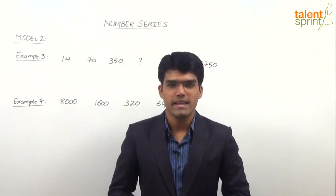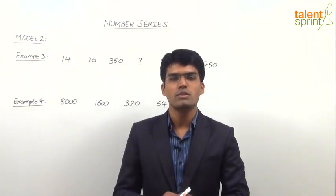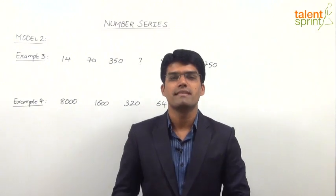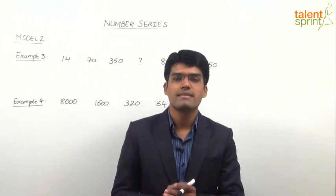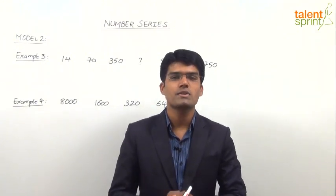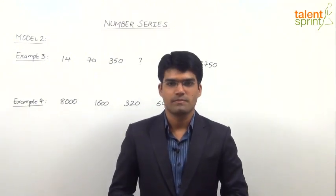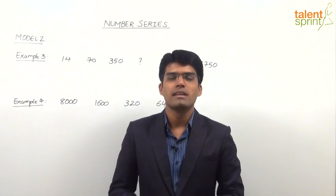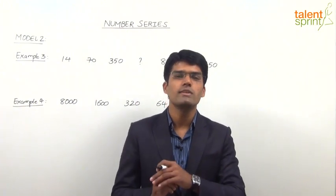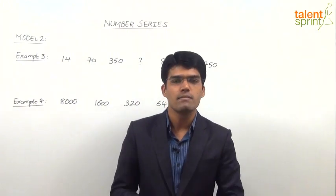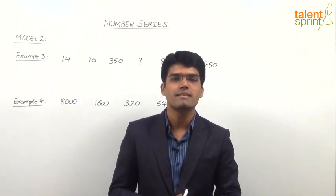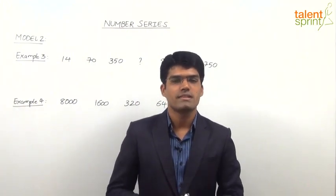Let us now take the next set of examples from Model 2 of number series, where the series are based on geometric progressions — that is, the ratio between two consecutive terms of the given series is a constant value.